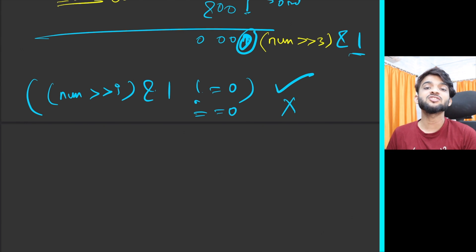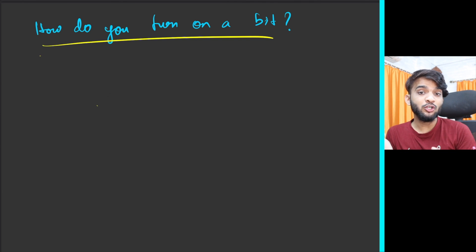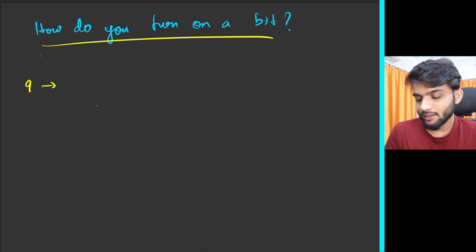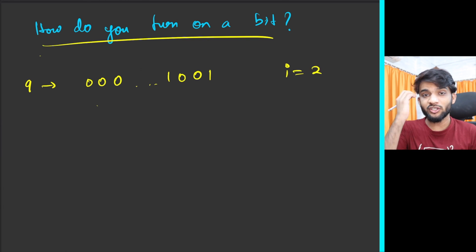It's very simple. If num right shift of index which you are checking for AND one, if this is not equal to zero then the bit is set. If it is equal to zero, then the bit is not set. This is how you check if a bit is set or not set. The next prerequisite will be how do you turn on a particular bit.